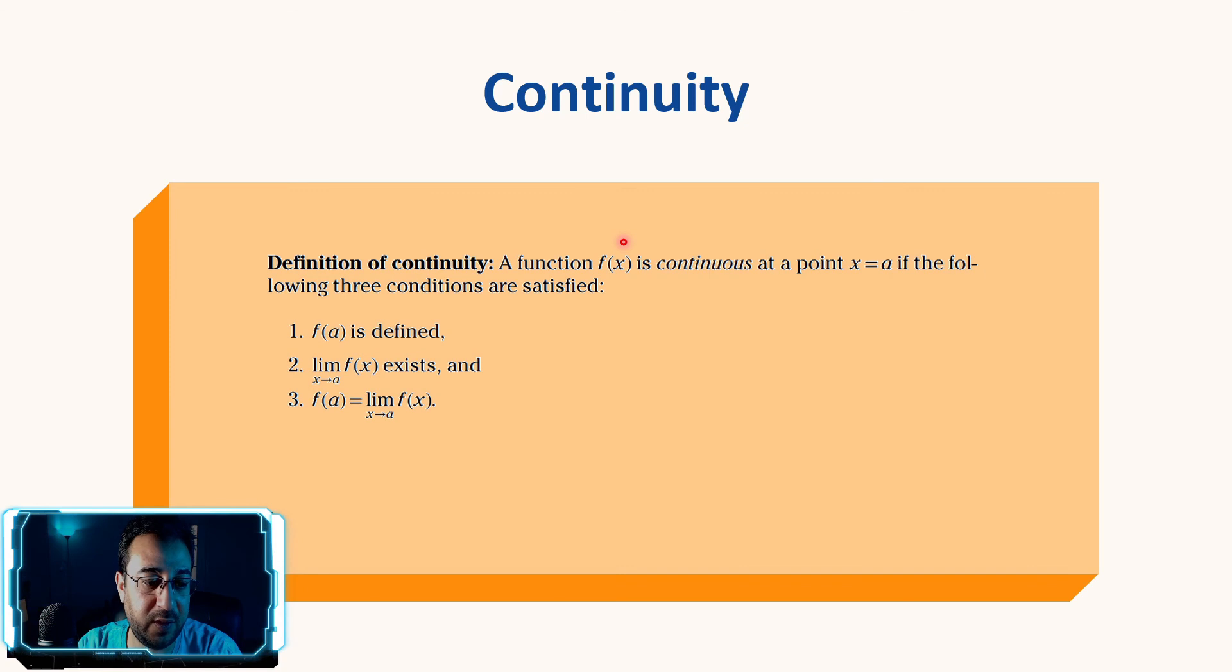Then the third condition: f(a) should equal the limit of f(x) as x equal a. So firstly f(a) need to be defined, secondly the limit of f(x) as x approaches to a should exist, and thirdly the f(a) should equal the limit of f(x) as x approaches to a. And that's how you check continuity. Moving forward we will have some examples on how to check the existence of a limit and how to check the continuity of a function, and we get as much details as we can to make sure you guys are clarified on how to check the limit existence and the continuity.